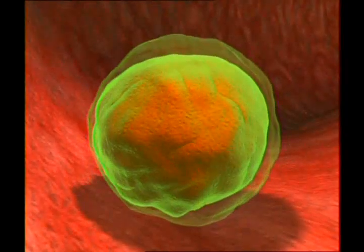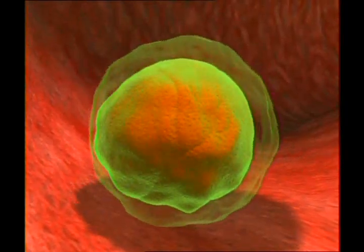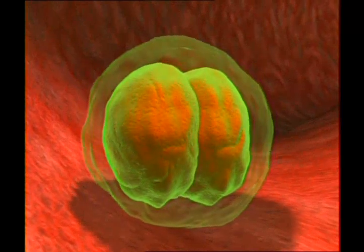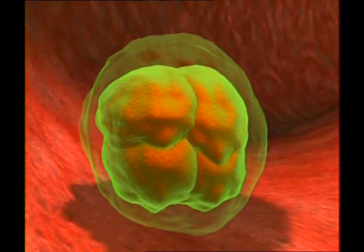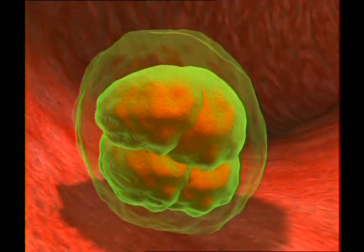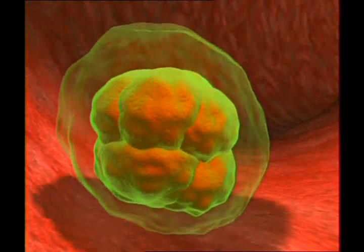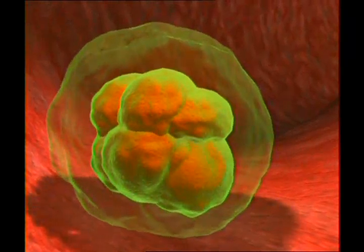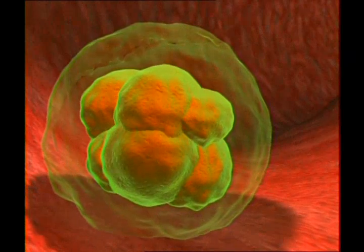Shortly after fertilization, the cell will perform another very surprising action. It divides and two new cells form. Then these cells divide again and become four cells. The construction of a new human being has now begun. But why does the cell decide to divide? Why does it have the task of building a new human being? Who gave the cell the knowledge to build a new person?